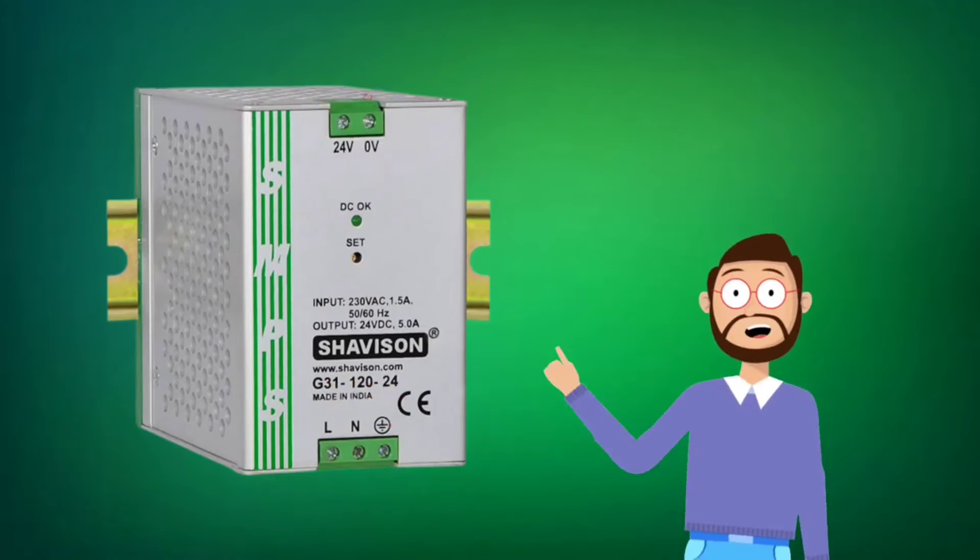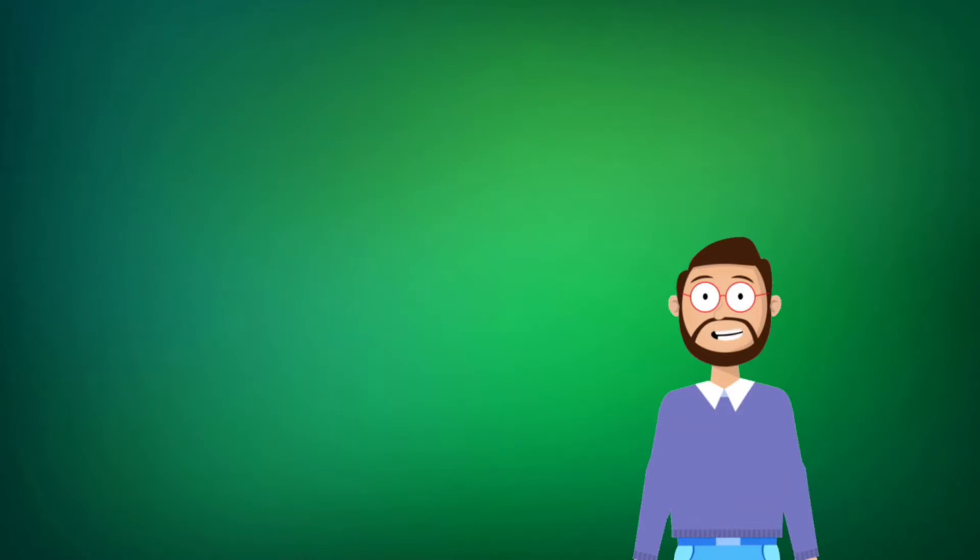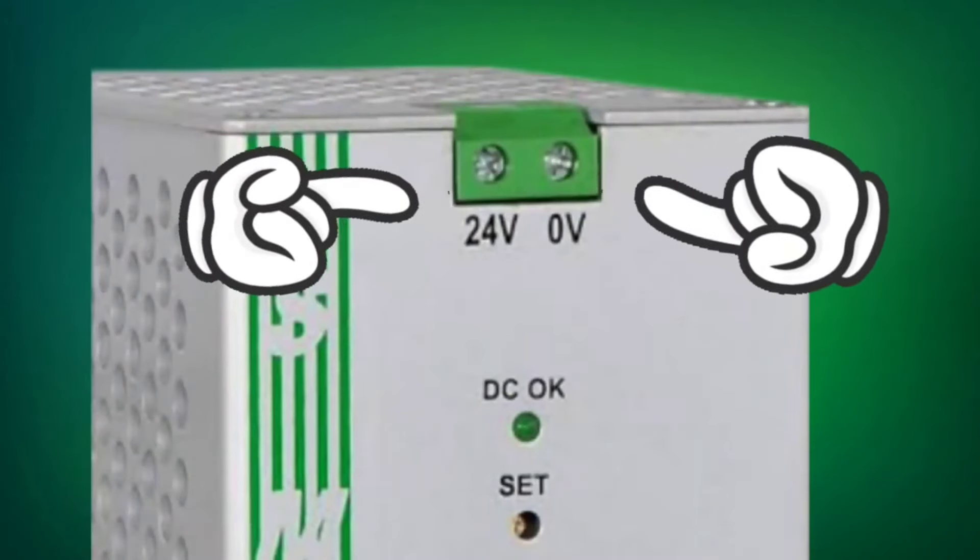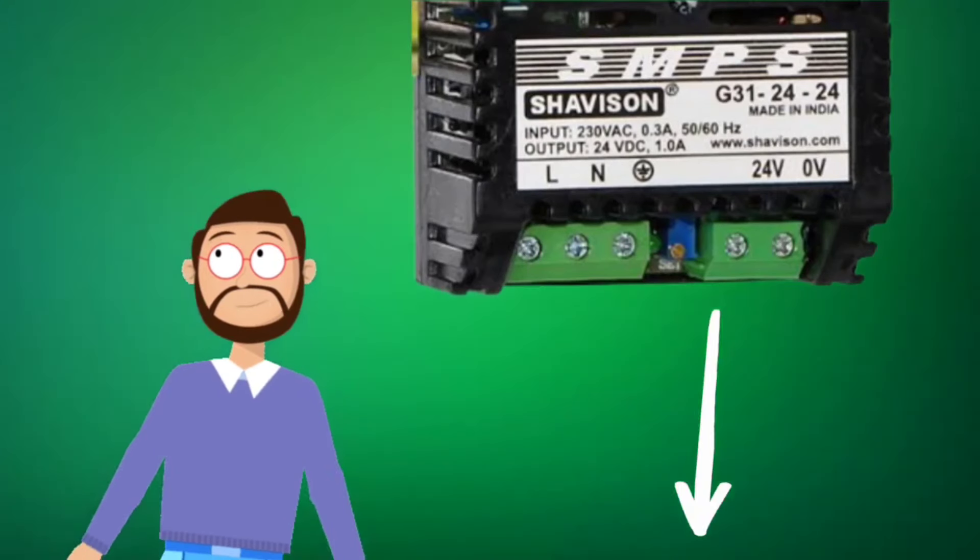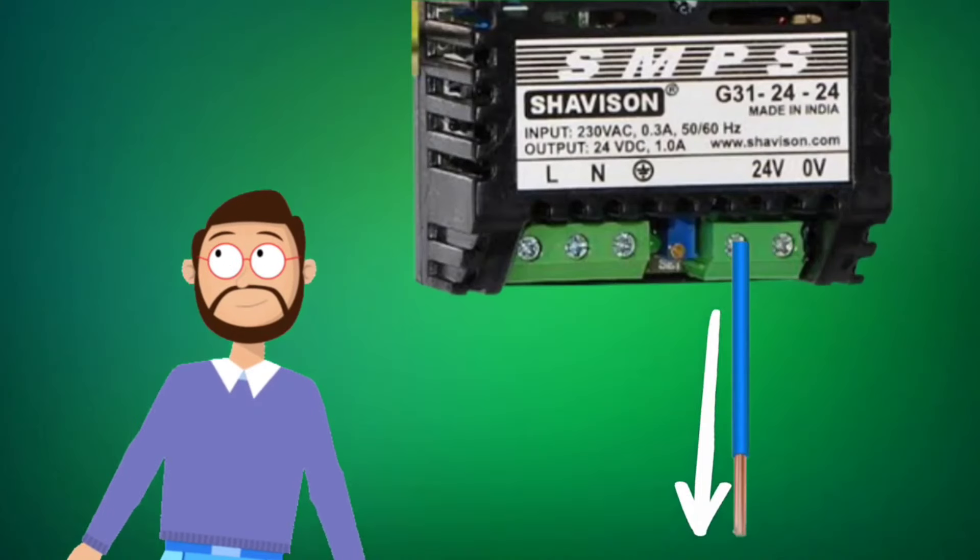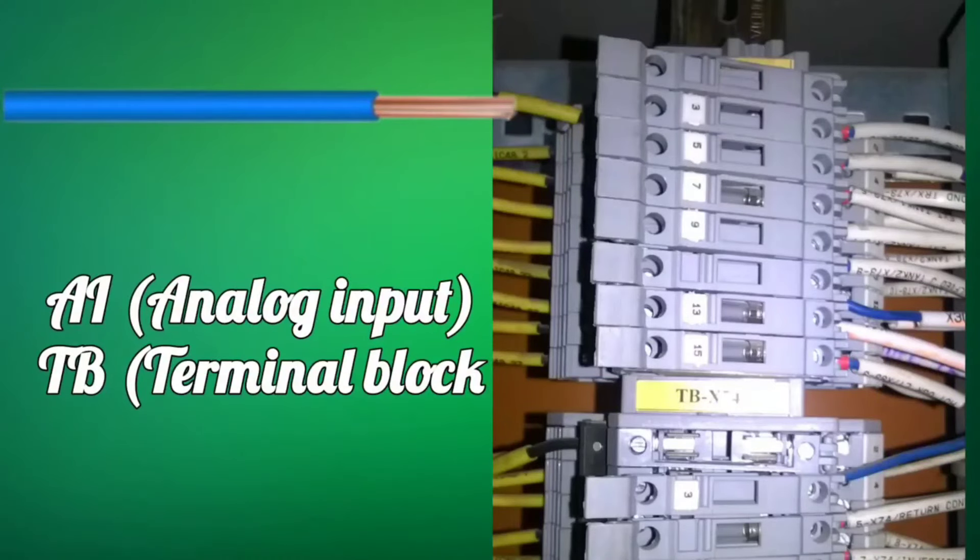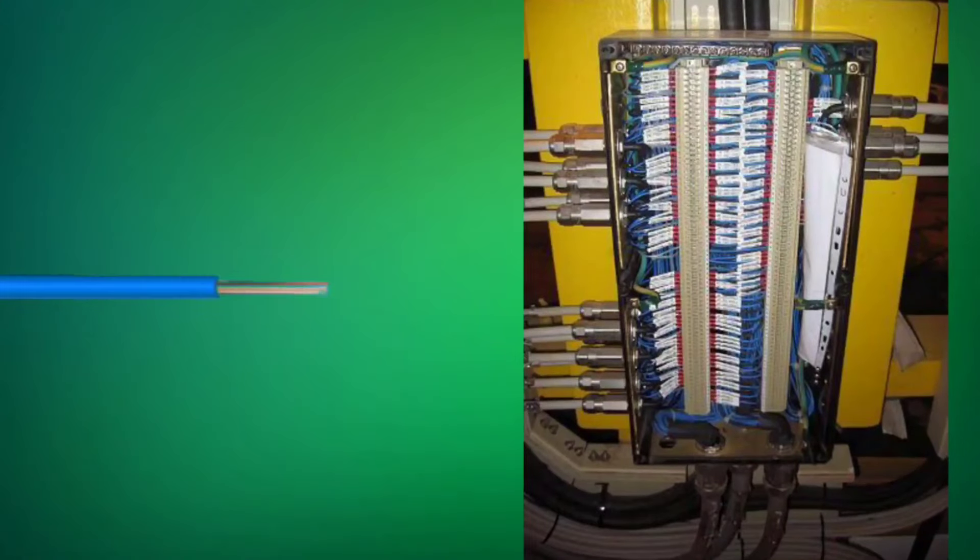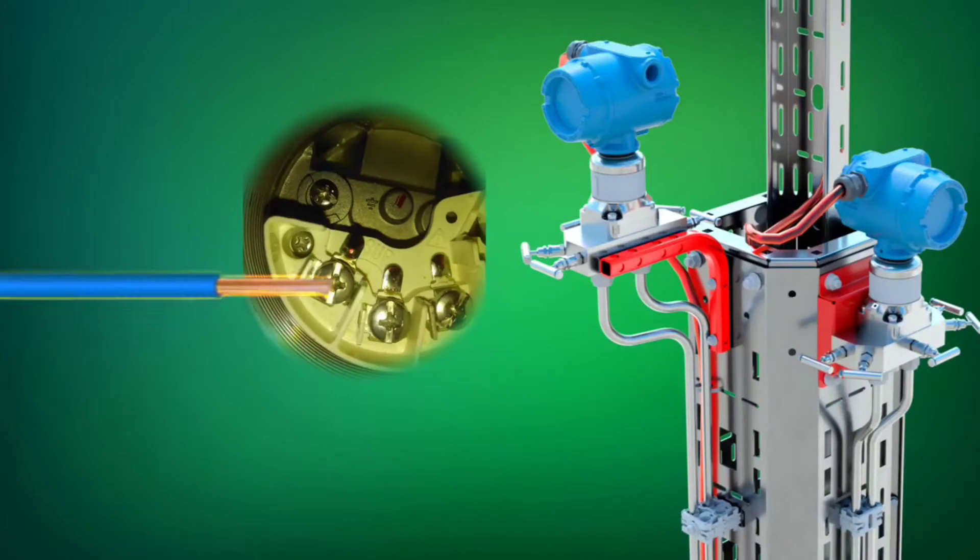There are two terminals at the output of SMPS. Usually, 24V is written on one of these and 0V is written on the other side. Now, whatever we are using SMPS or 24V DC supply, the one with 24V written on it, we send it to the PLC panel. In the PLC panel, this wire is connected to AITB. After this, the wire is passed through field JB to the transmitter and this wire is connected to the positive terminal of the transmitter.